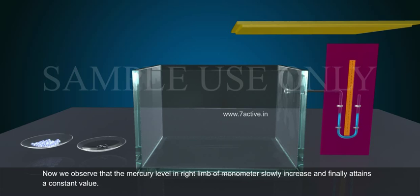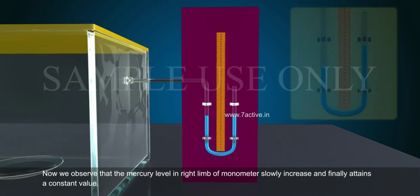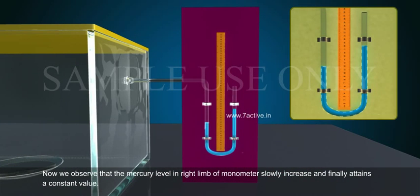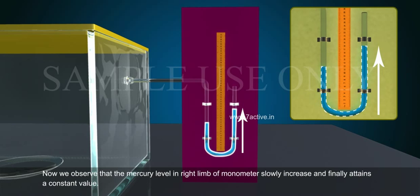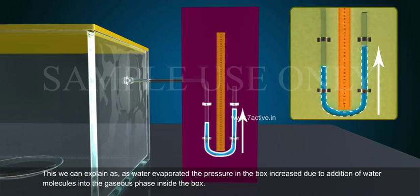Now we observe that the mercury level in the right limb of the manometer slowly increases and finally attains a constant value. This we can explain as: as water evaporated, the pressure in the box increased due to addition of water molecules.